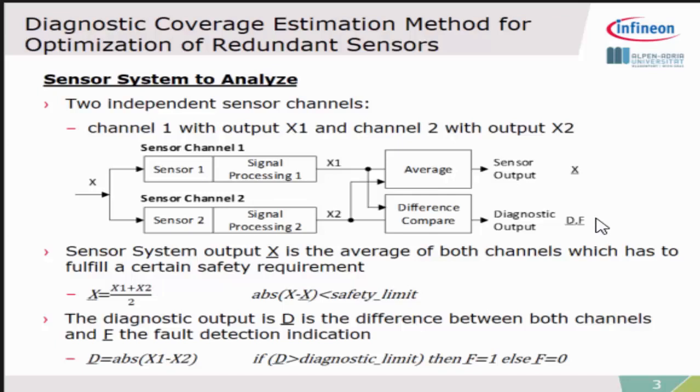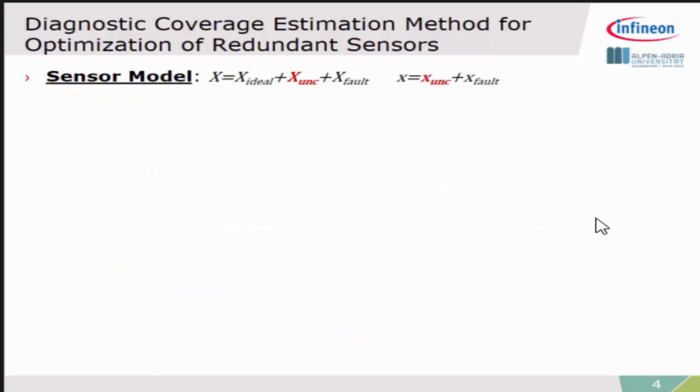Starting with the sensor model, I modeled it that way that the sensor output contains the ideal output plus the measurement uncertainty and a kind of fault. Since I only want to focus on the deviations, I only have a look on the uncertainty and the fault of sensor systems.